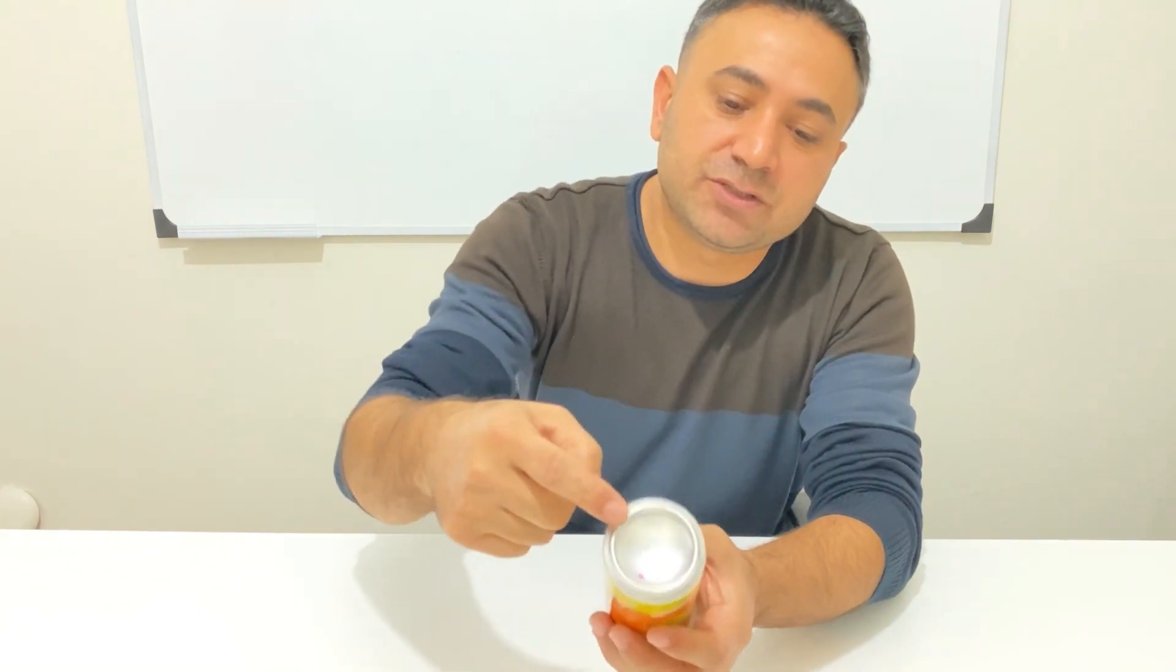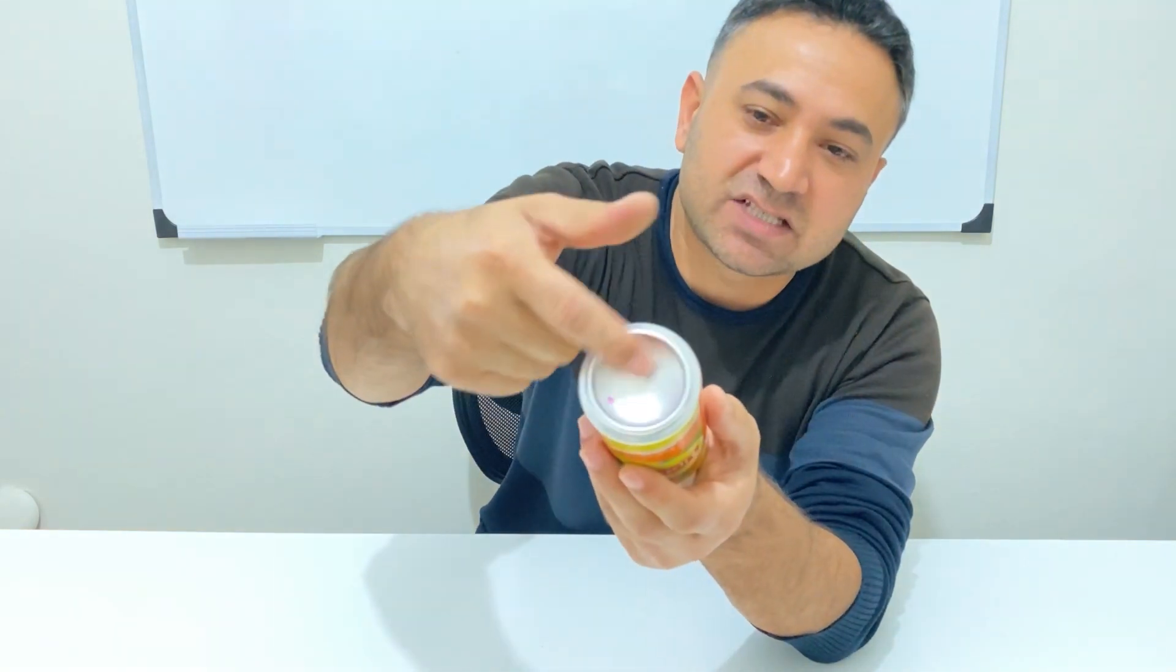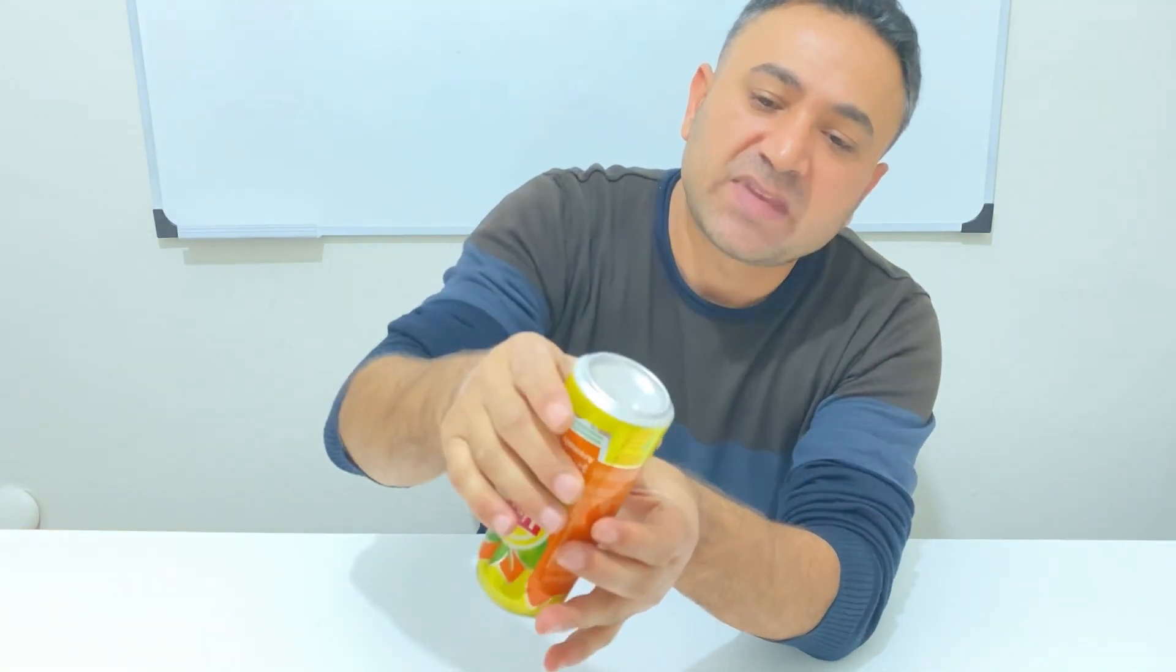Now before we get started on our project, let me introduce the materials we are going to use. I'm going to use this can as the convex mirror. This part of this can is very suitable to use as a convex mirror.